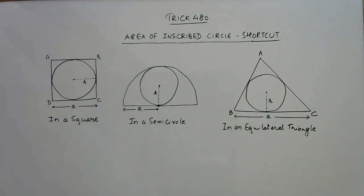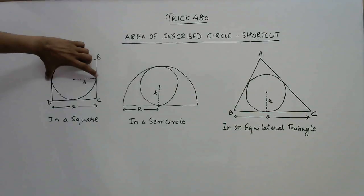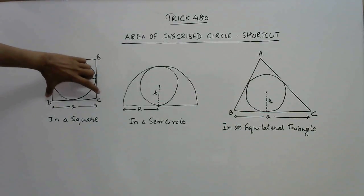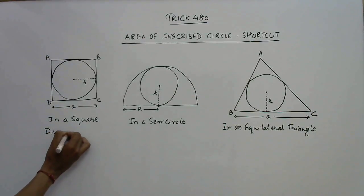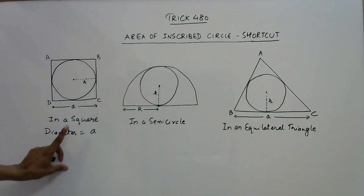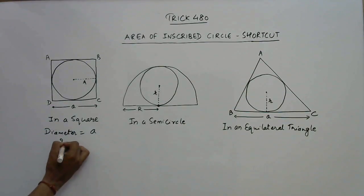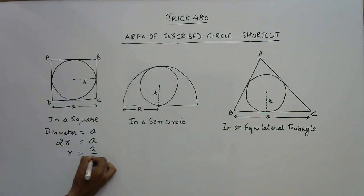In the first figure we have a square of side a, and let us assume that the inscribed circle has a radius r. As you can see, this portion, that is the diameter of the circle, is equal to the side of the square. So diameter is equal to the side of the square, and we all know that diameter is twice the radius, so the radius comes out to be a upon 2.